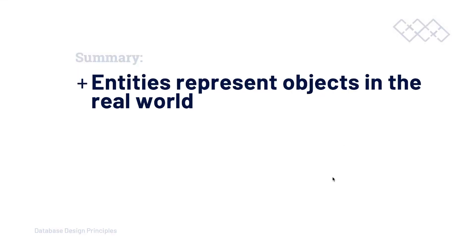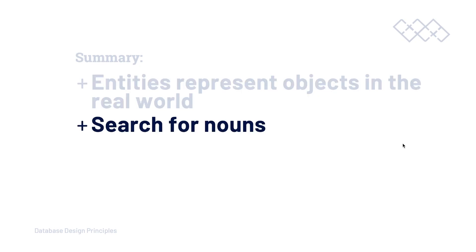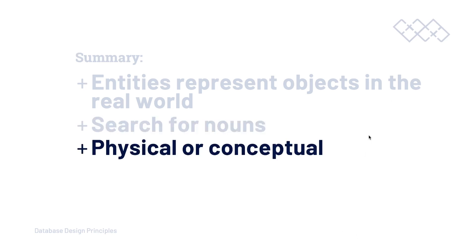Because it bears repeating — entities represent objects in the real world. So let's search for nouns; that can be a good place to start. Go through your documentation and search for nouns to identify the entities. Remember, they can be physical or conceptual. The conceptual ones aren't necessarily always obvious, so maybe look for the physical, more obvious entities first — establish those entities which are going to be critical for that particular service, like product or car, as we've discussed. And then you can work from there.